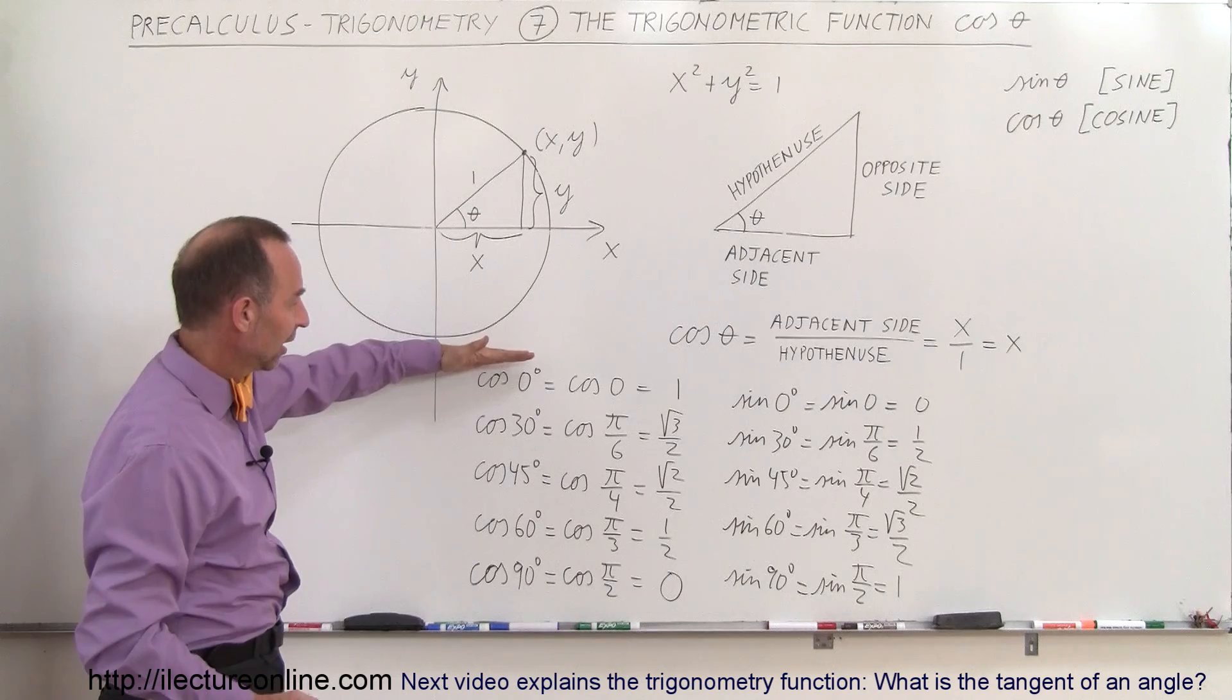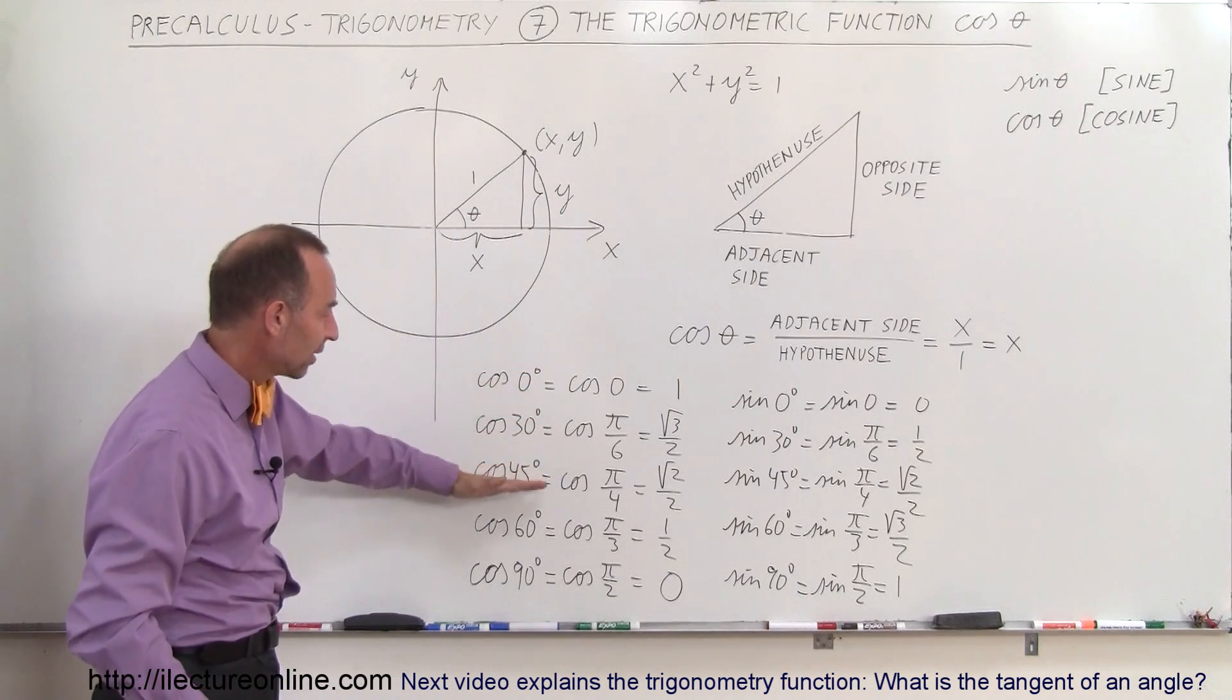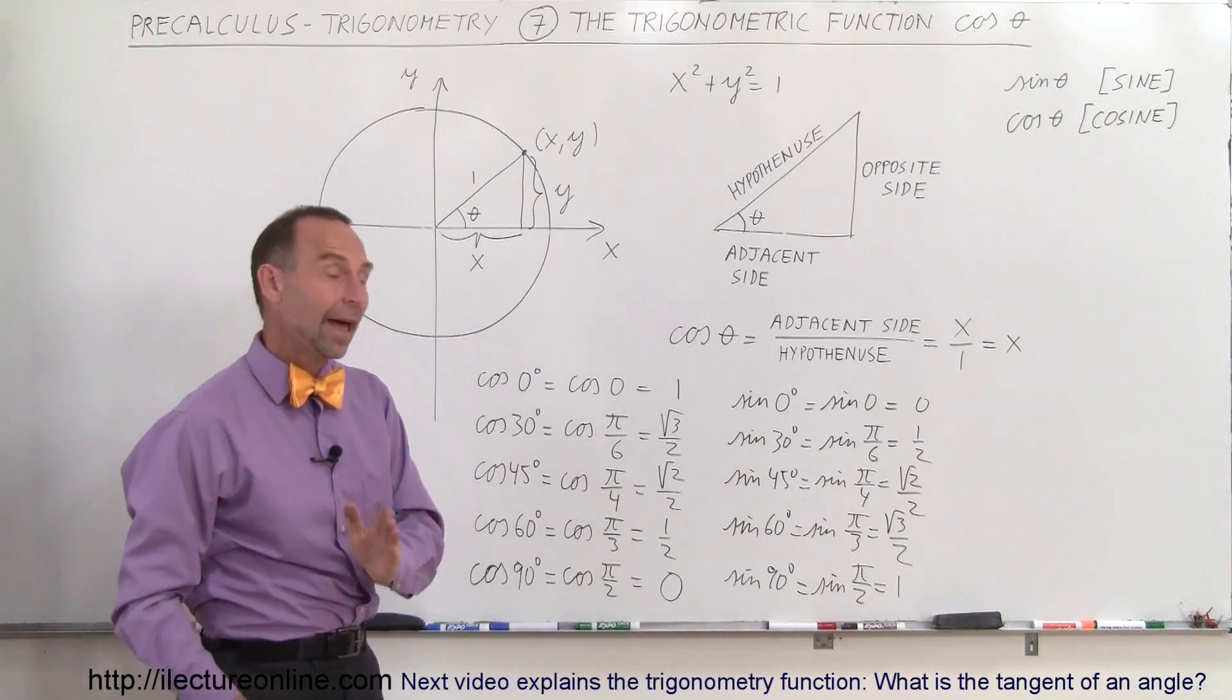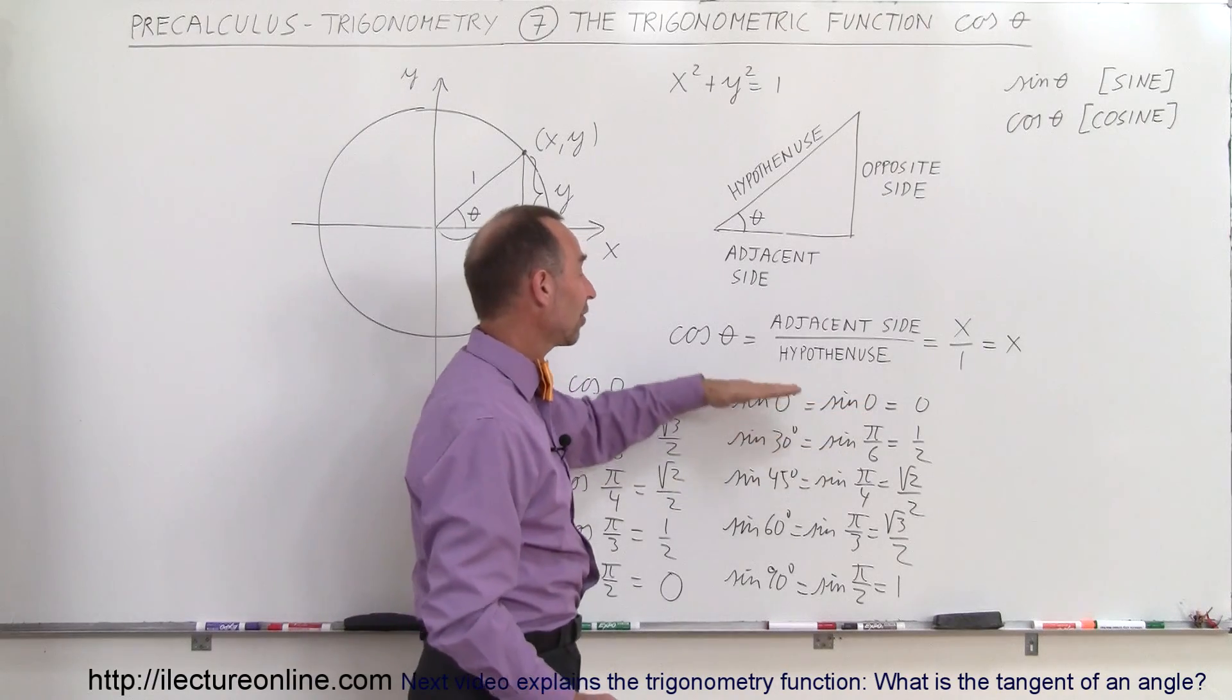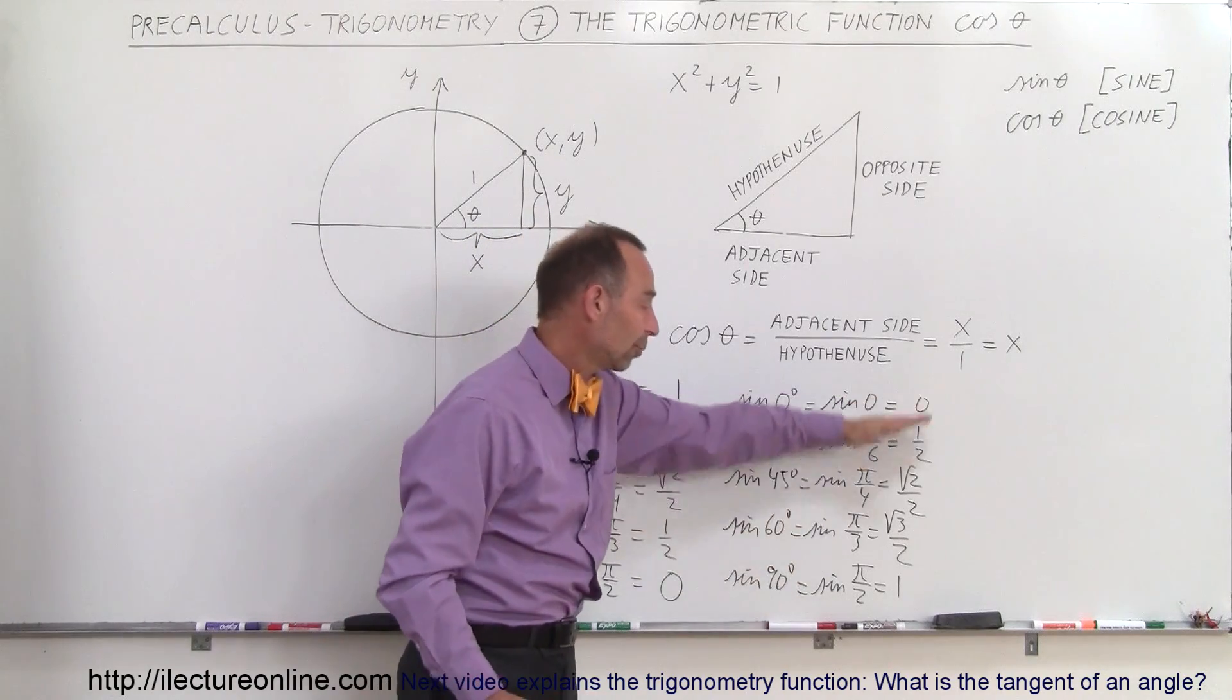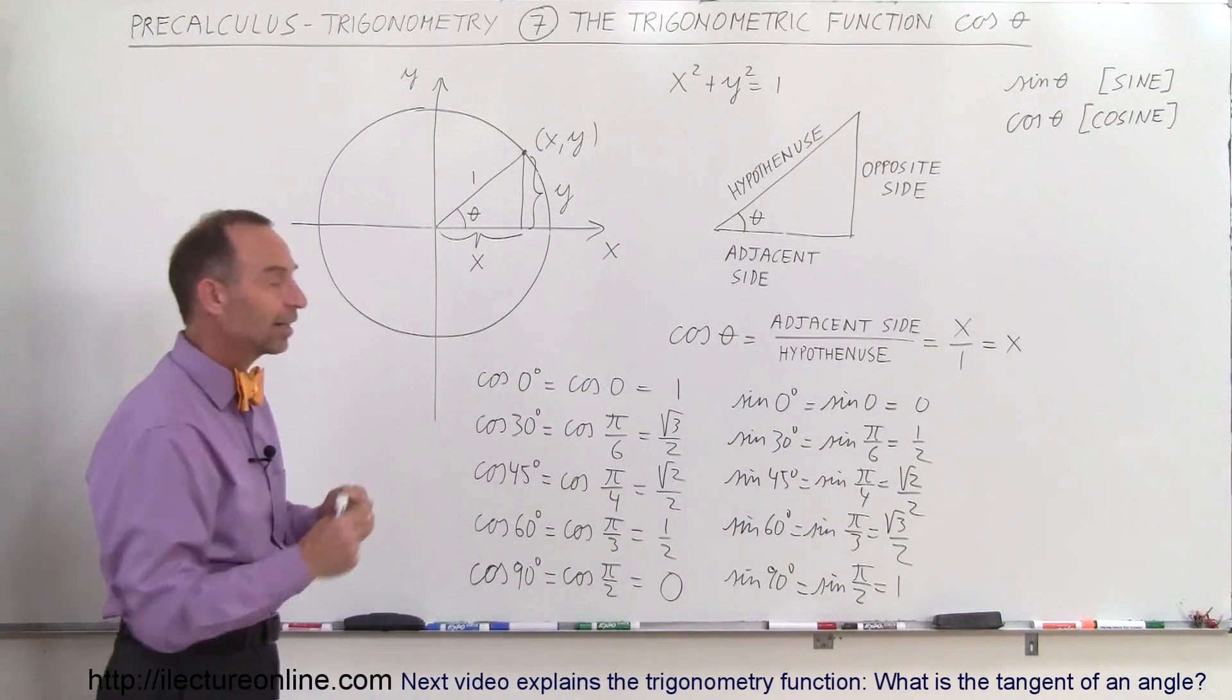So as the cosine—as the angle gets bigger, the cosine of the angle goes from 1 to 0. As the angle gets bigger, the sine from 0 to 90 degrees goes from 0 all the way up to 1. So it's exactly in reverse.